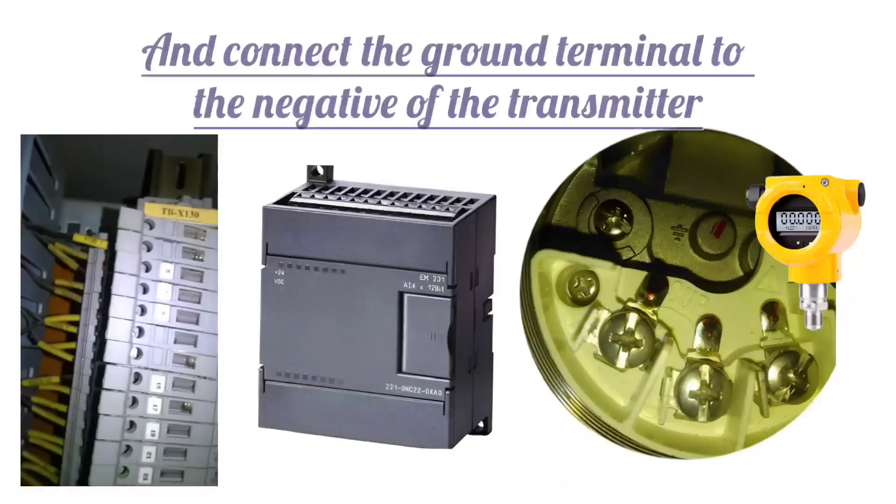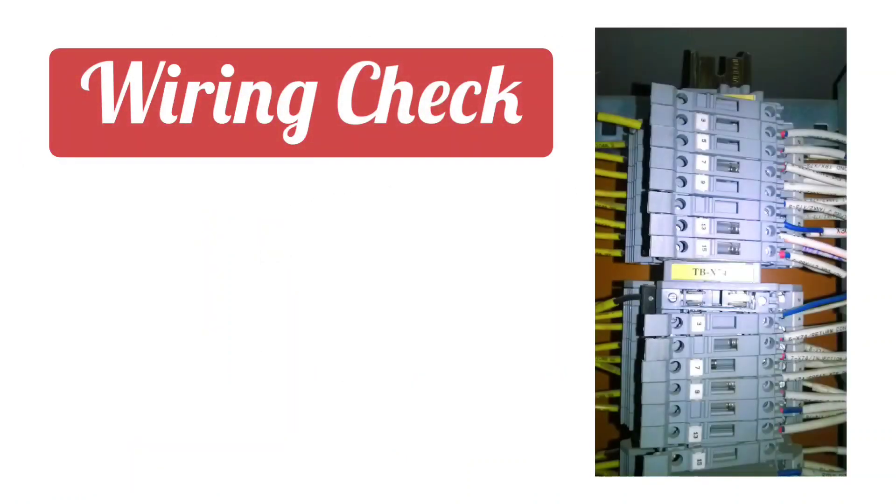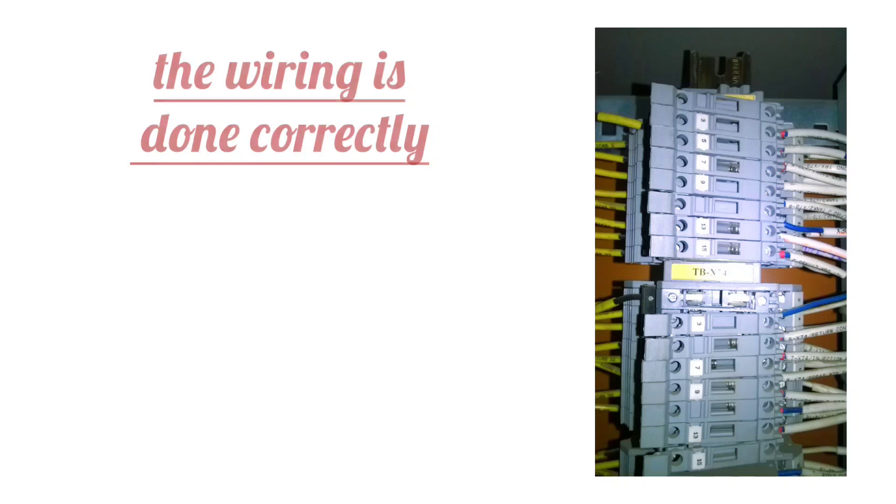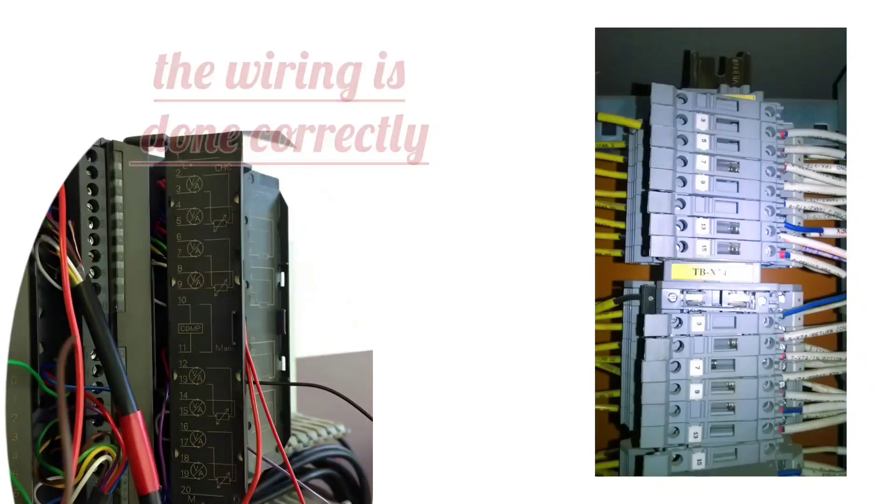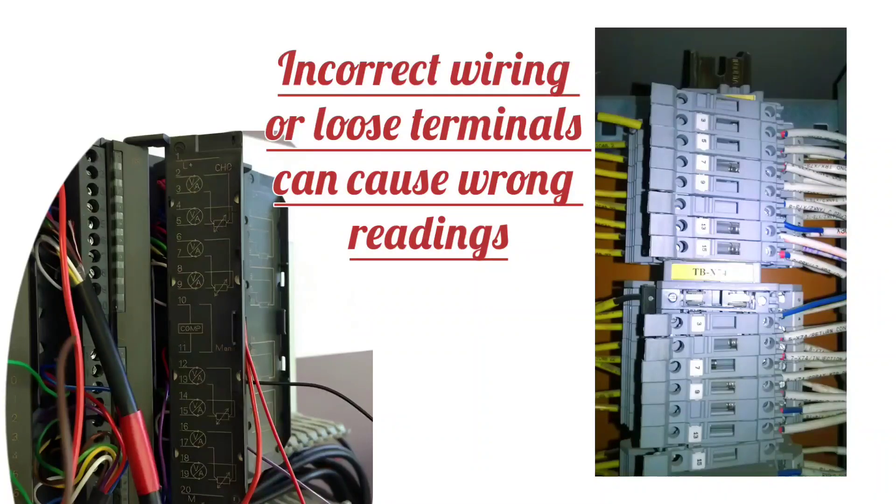And connect the ground terminal to the negative of the transmitter. Next step is wiring check. Make sure the wiring is done correctly and the terminals are tight. Incorrect wiring or loose terminals can cause wrong readings.